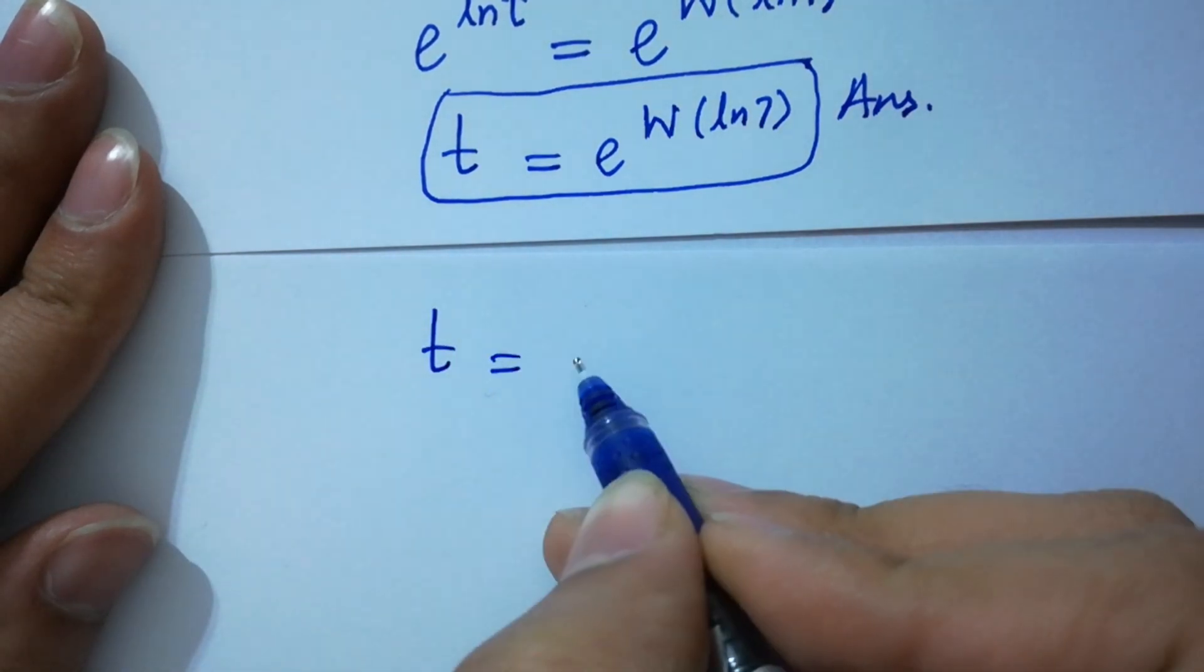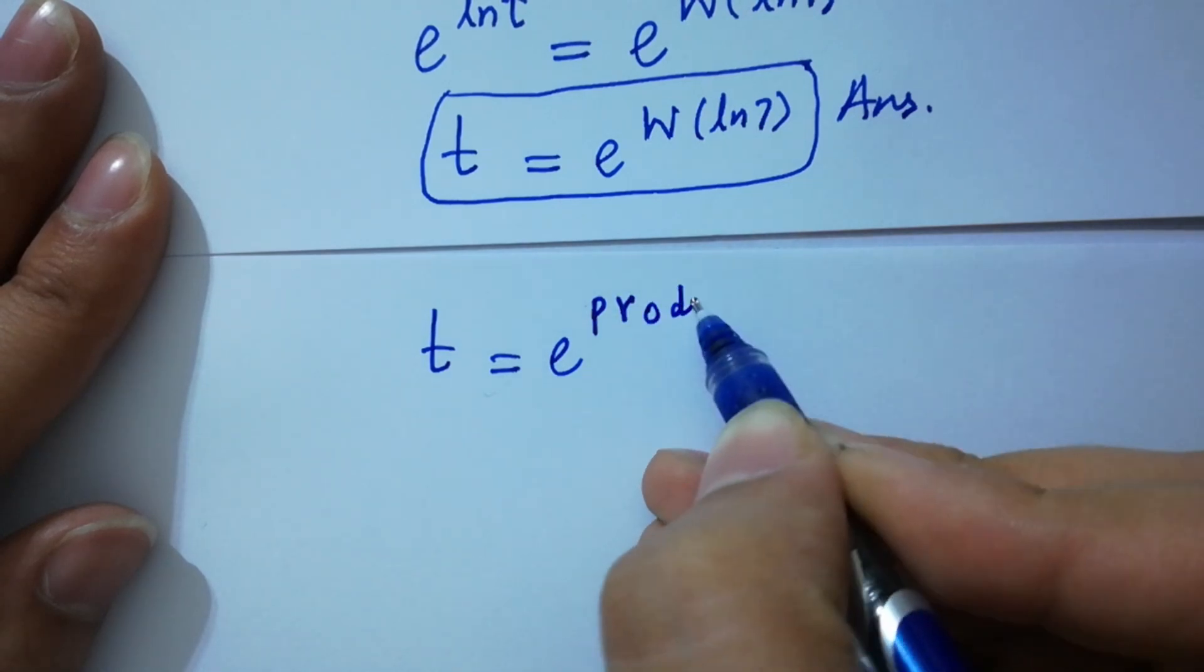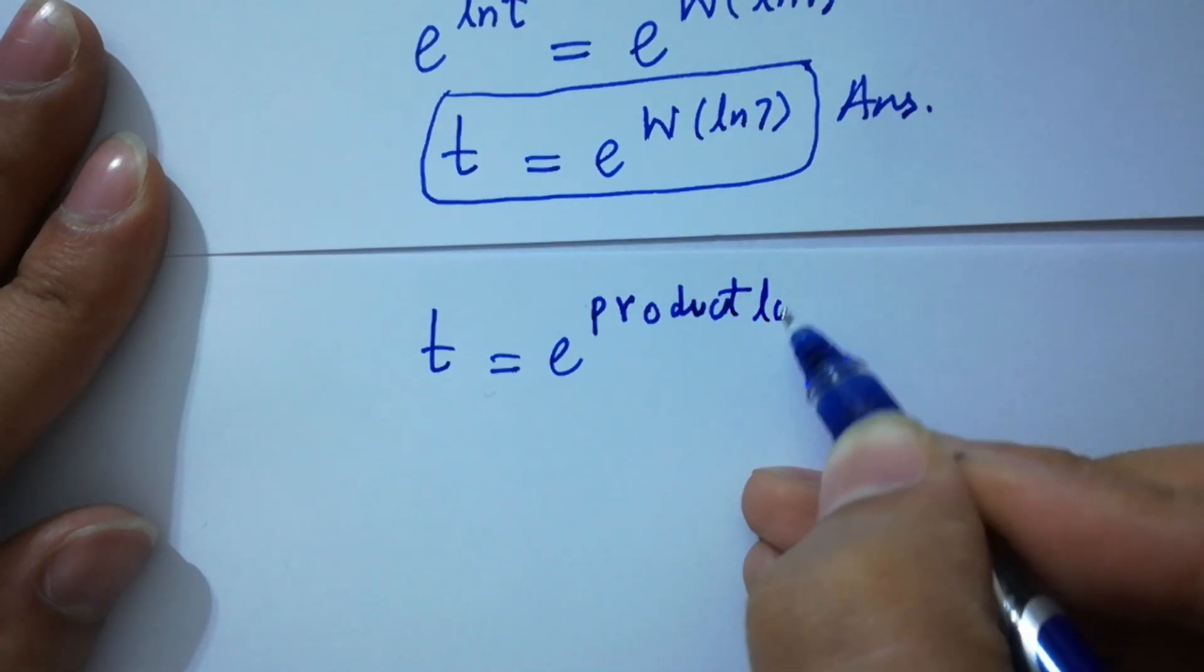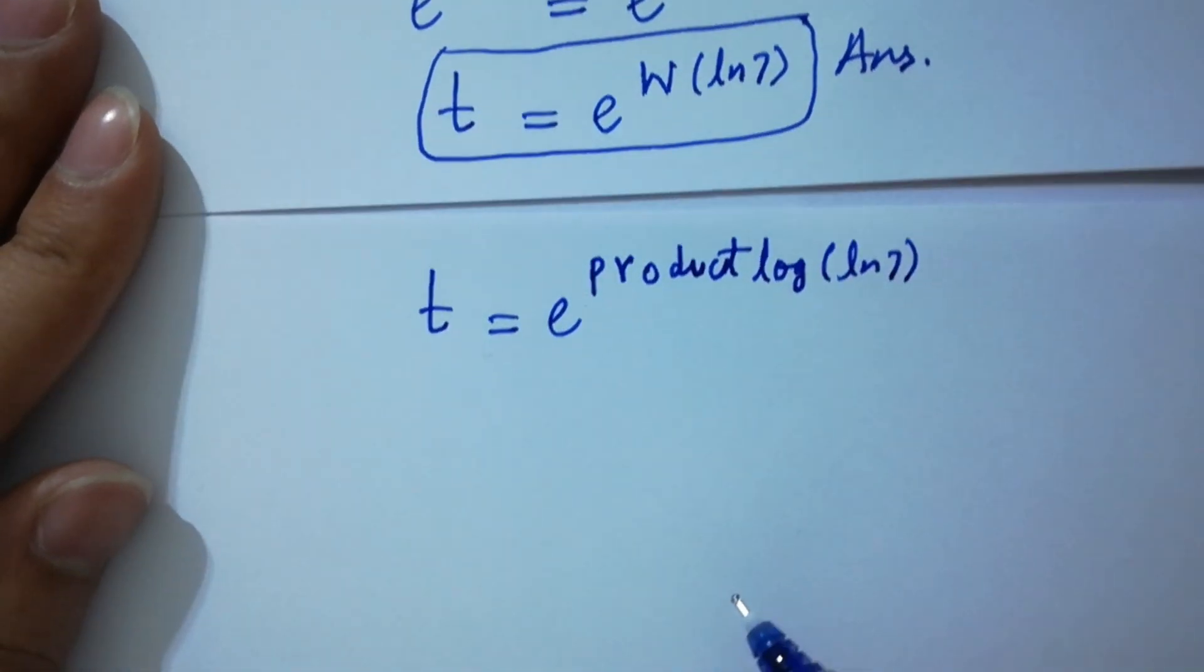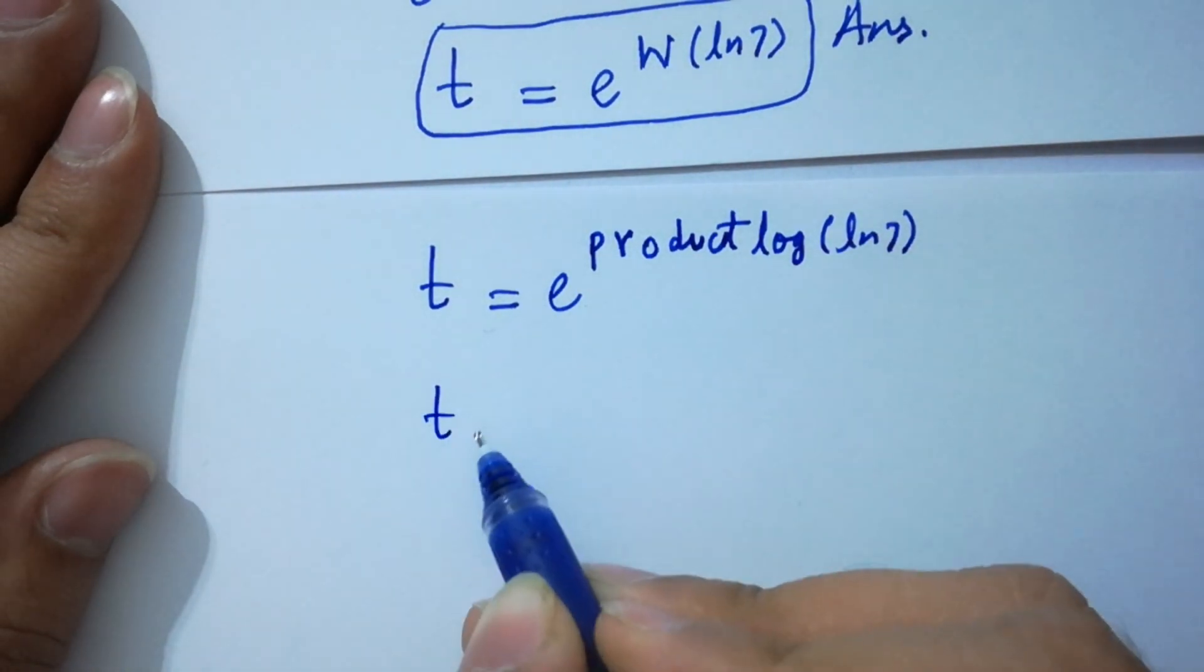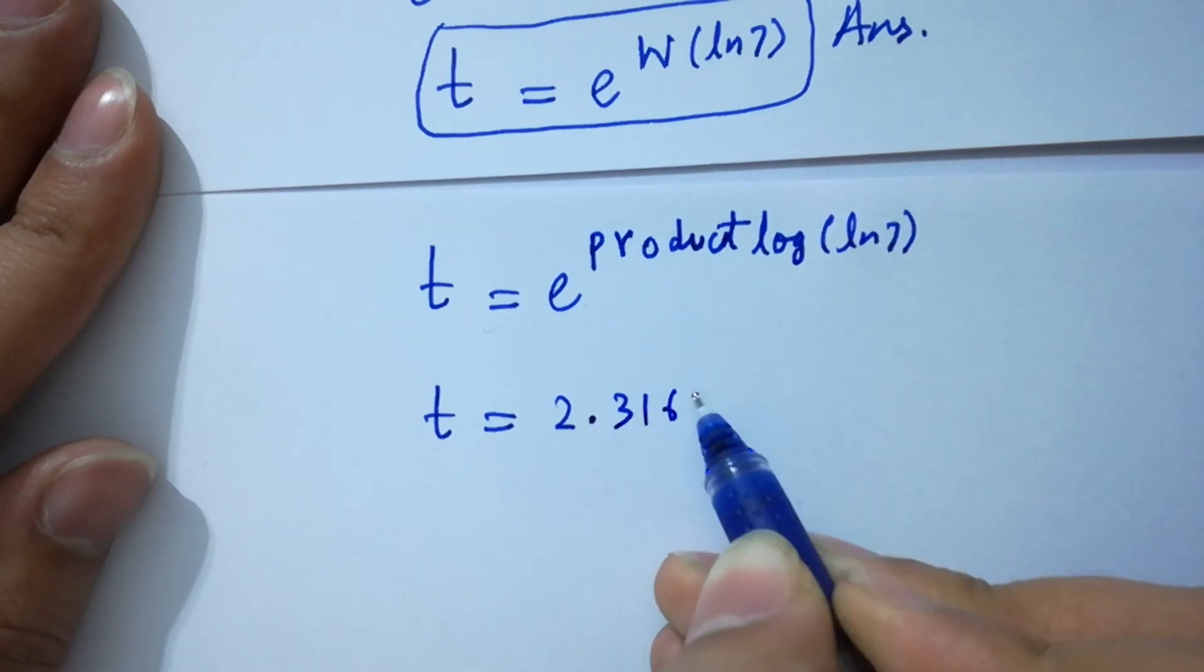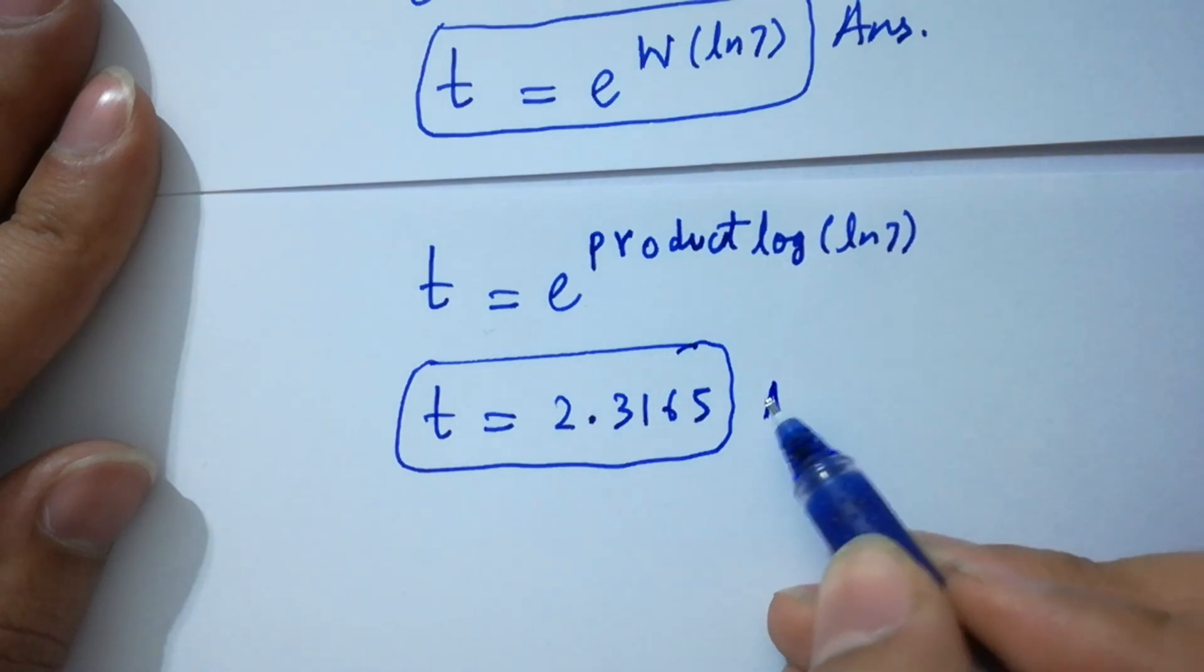E to the power W(ln 7), where ln 7 equals 2.3165, which is also the answer.